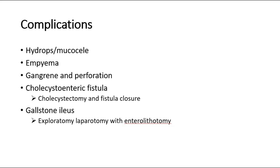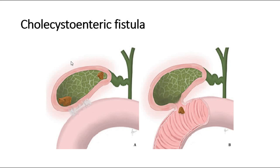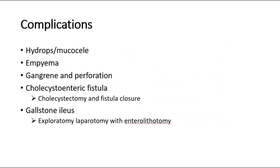Gangrene and perforation can occur in late stages of cholecystitis. Cholecystoenteric fistula is where a fistula forms between the gallbladder and the intestine after repeated attacks of cholecystitis. This condition is usually asymptomatic; on abdominal X-ray, we can see aerobilia, meaning accumulation of gas in the biliary tree. If symptomatic, the fistula should be treated with cholecystectomy and fistula closure.